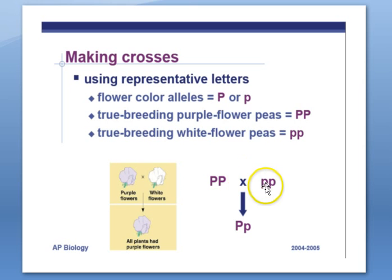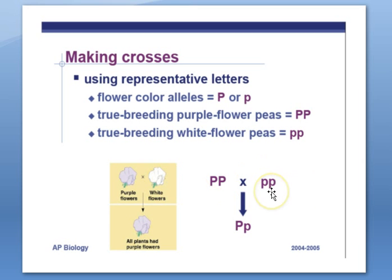The cells produced by meiosis happen the same way for males and females. Here we have a purple plant (phenotype) crossed with a white plant (phenotype). The genotype for the purple flower parent is PP, and the genotype for the white flower parent is pp. These cross together to make offspring with genotype Pp.